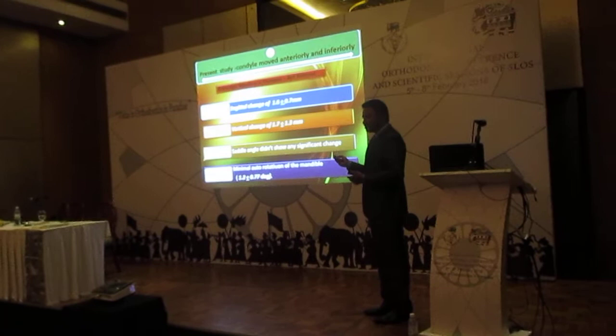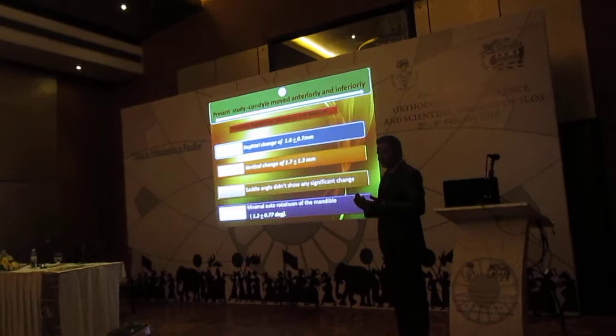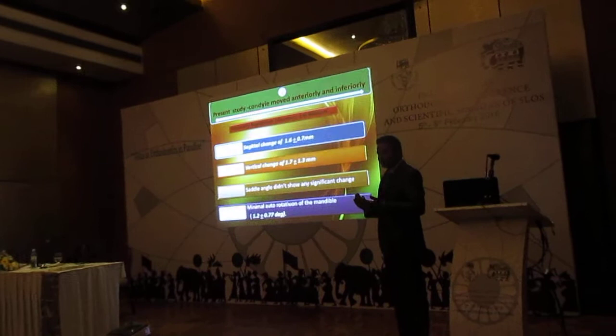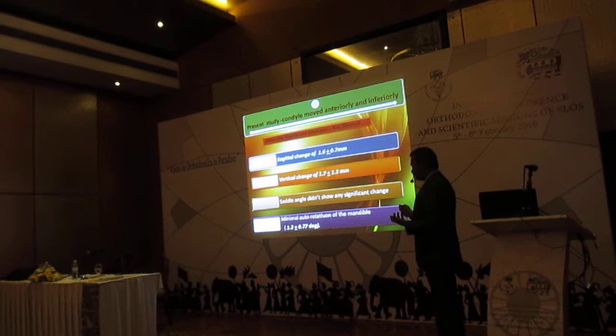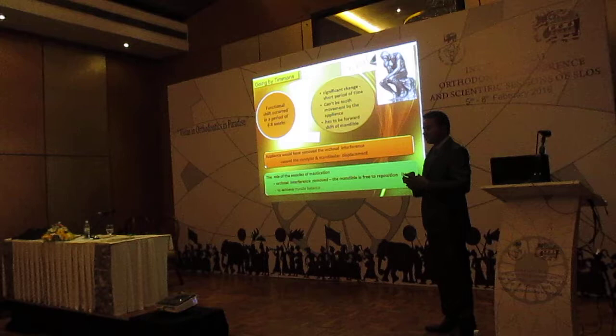In my present study, we had clinically significant changes, even though the sample size was small. It was not a massive change, but the condyle moved around 2 mm. In orthodontics, we feel every millimeter — the maximum tooth movement is about 7 mm — so 2 mm of condylar movement is significant even for this small sample. There was also a vertical change and a clockwise rotation of the mandible. So why? What is the reason for this observed change?